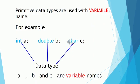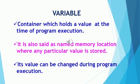These primitive data types are used with a variable name. For example, to declare a variable of integer type, I will use the keyword int followed by the variable name. In the examples, three variables are declared of different data types: int A, double B, and char C, where int, double and char are data types and A, B and C are variable names.